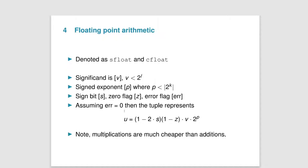Given all these values, the floating-point value represented by all these parameters is given by this equation. You can see here that we have the sign bit — if the sign bit is 1 then we have a negative number. We also have the zero bit; if the zero bit is 1 then we have zero. And then you have your significand and your exponent.